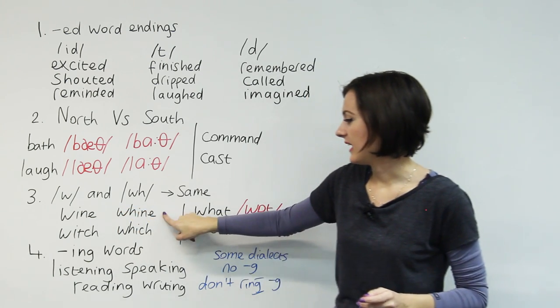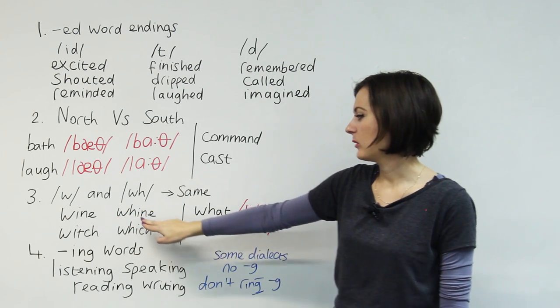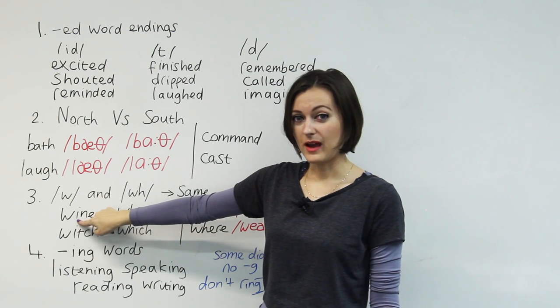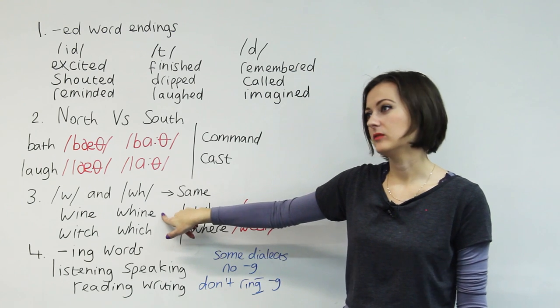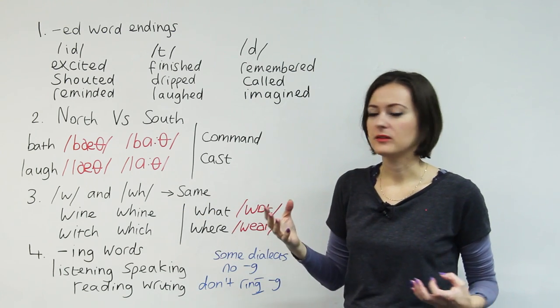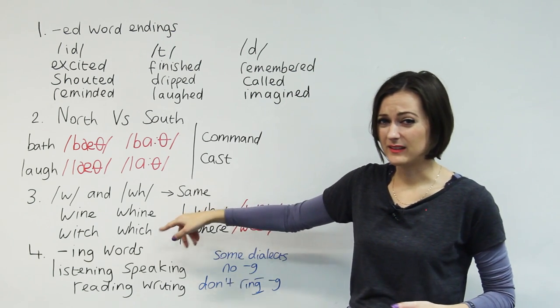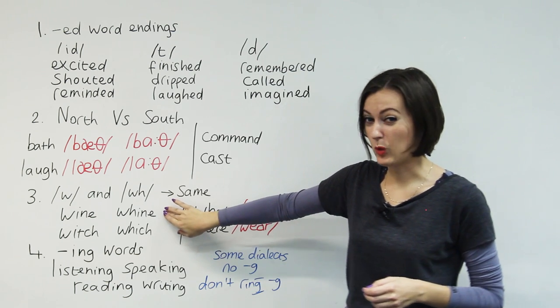So we've got two words here, wine and whine. One's spelled with WH. One's just spelled with W, but they sound the same. Whine is a kind of moan or a kind of cry. Sometimes young children whine. Sometimes women who are upset about something are said to be whiny.